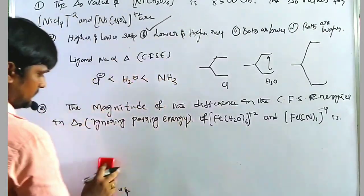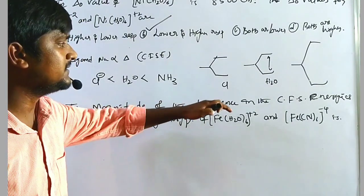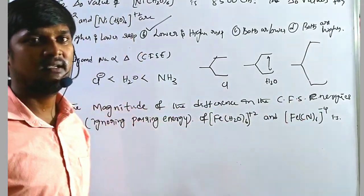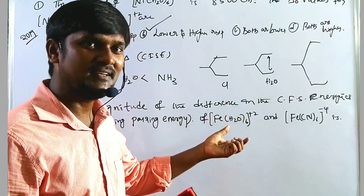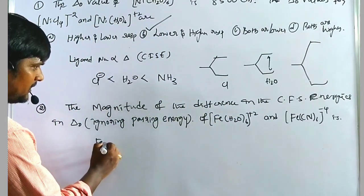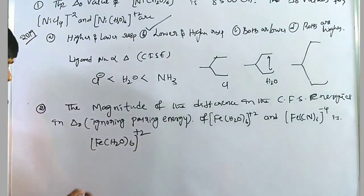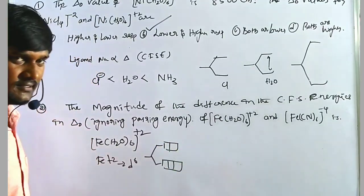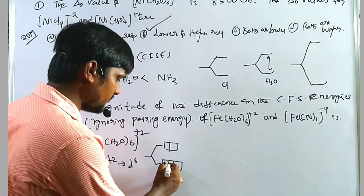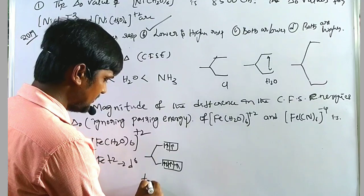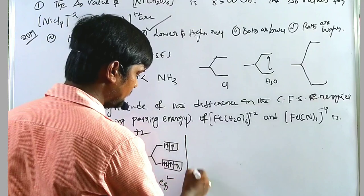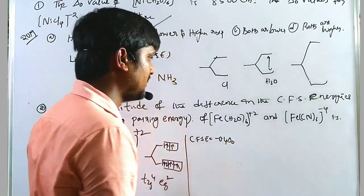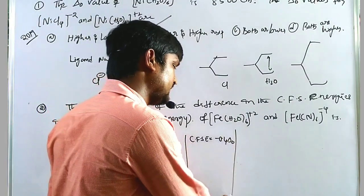Question number 2: find the magnitude of the difference in crystal field stabilization energies in delta O, ignoring pairing energy, for Fe(H₂O)₆²⁺ and Fe(CN)₆⁴⁻. Fe(H₂O)₆²⁺ means Fe is in +2 oxidation state — that is d⁶. With 6 electrons in a weak field ligand, they fill as T₂g⁴ eg², giving a CFSE value of minus 0.4 ΔO.